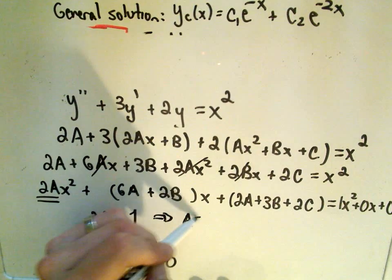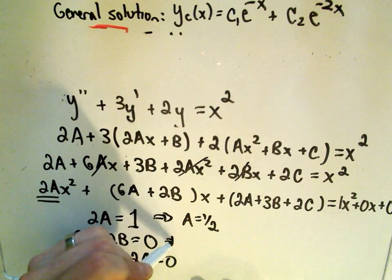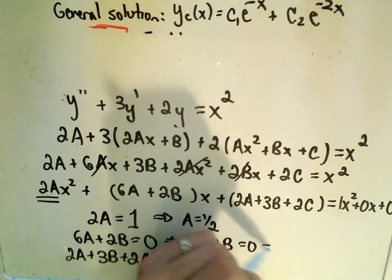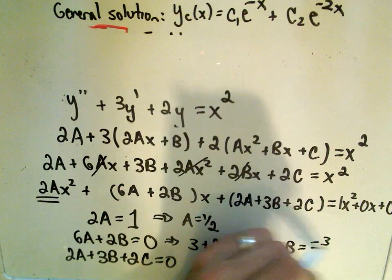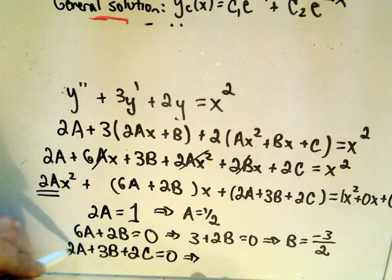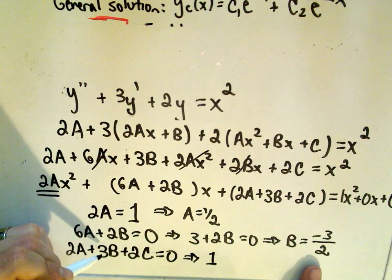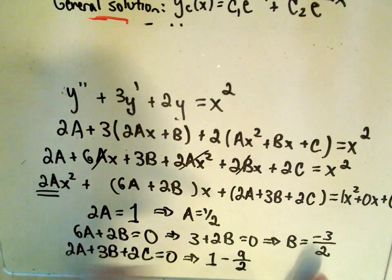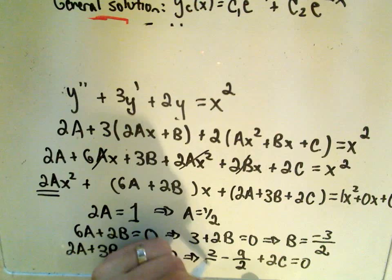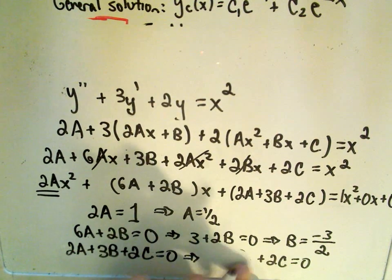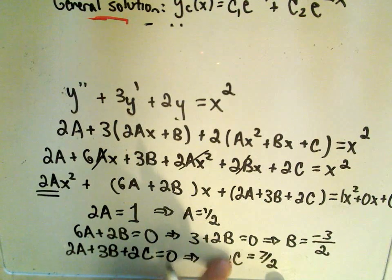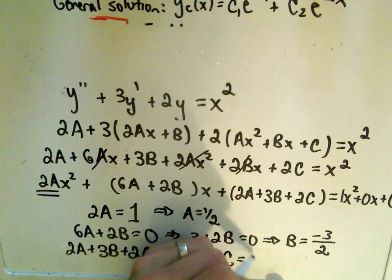The first one looks like we just get a equals 1 half. If I plug that in, a equals 1 half, well 6 times 1 half is going to give us 3 plus 2b equals 0. And if we solve for b, subtract 3 and divide by 2, looks like we get negative 3 halves. So now we can plug these into the last two. If a is 1 half, 2 times 1 half will be 1. 3 times negative 3 halves is going to give us negative 9 halves. And then it says plus 2 times c, that's going to give us 0. So I think we can solve this. We can make 1, 2 over 2. So 2 minus 9 halves is going to give us negative 7 halves. We can add that to both sides. So we'll get 2c equals 7 halves. Divide both sides by 2. And it looks to me like we'll get c equals 7 fourths.